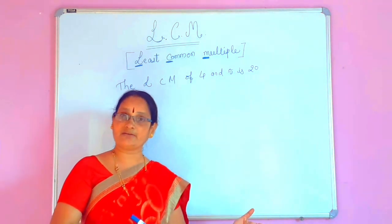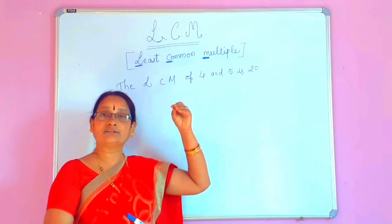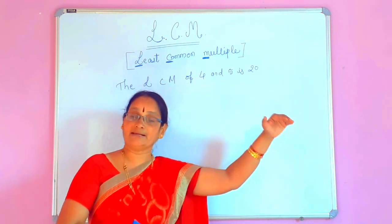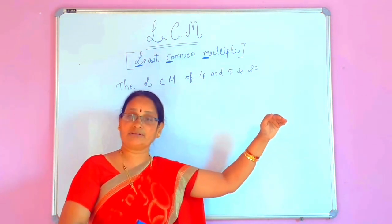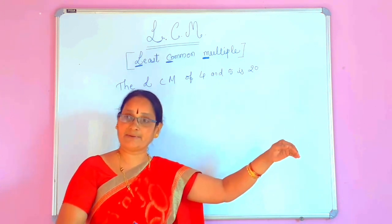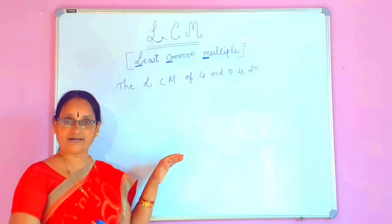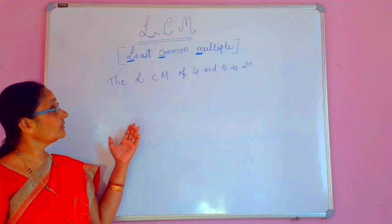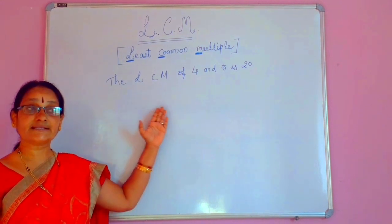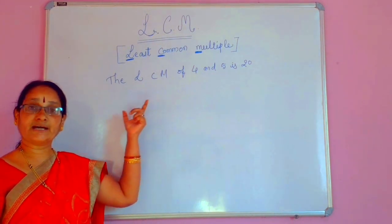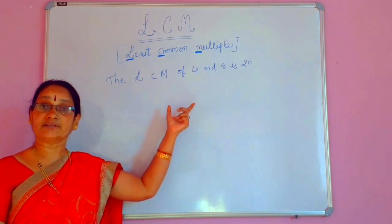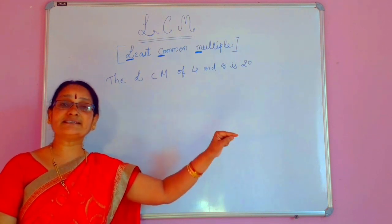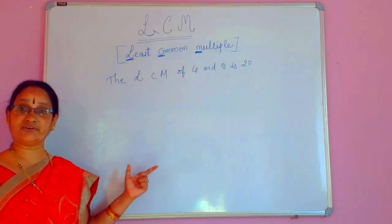Sometimes 2 numbers may be given, sometimes 3 numbers may be given — all those numbers are divisible by the LCM. The least common multiple of the two integers is the multiple which is divisible by the given two numbers. This is the definition.